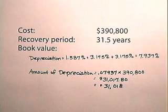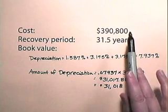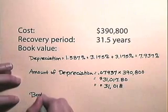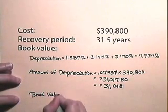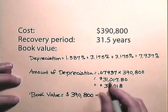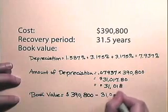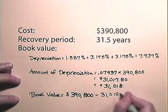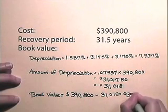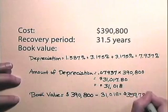So the book value at the end of three years will be the original cost less the depreciation. So the book value will be $390,800 less the depreciation $31,018, or $359,782.